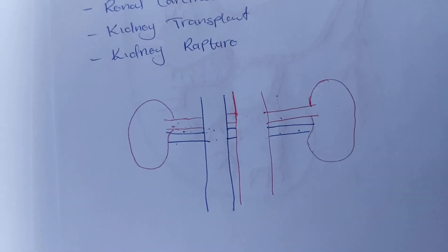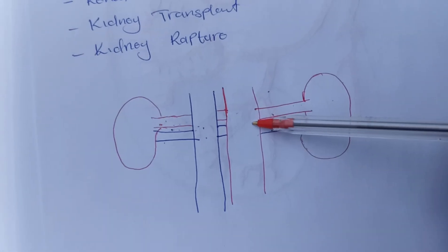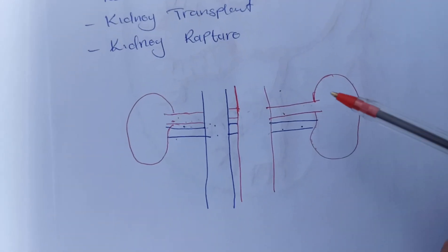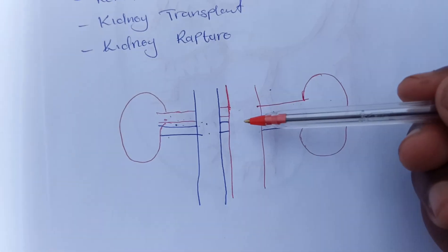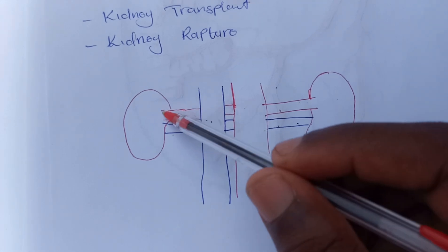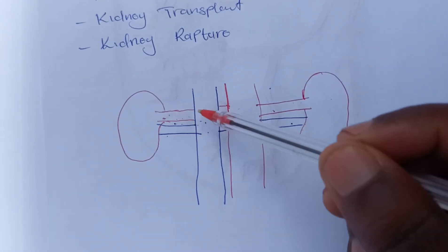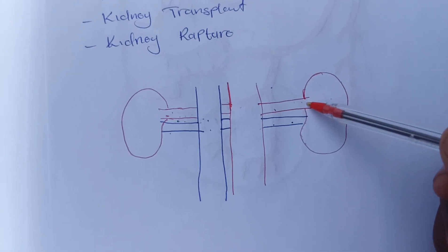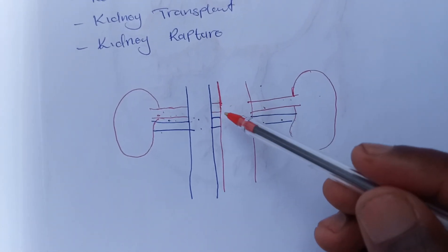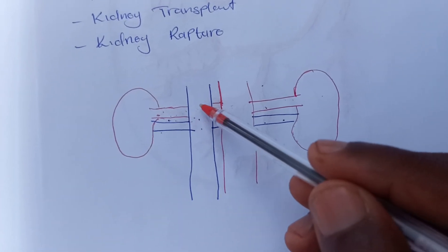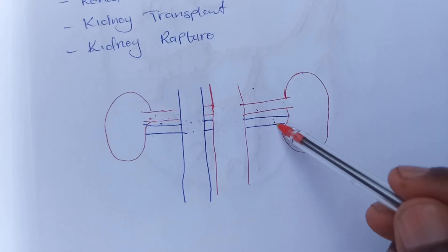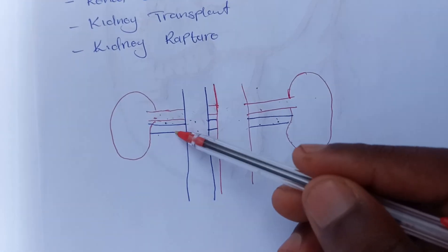The abdominal aorta is located slightly to the left, making the right renal artery slightly longer than the left renal artery. The inferior vena cava is located slightly to the right, which makes the left renal vein much longer than the right renal vein.